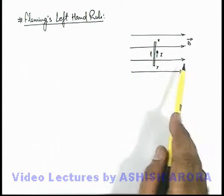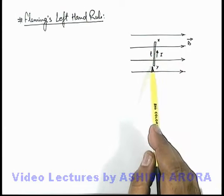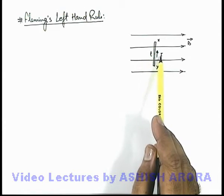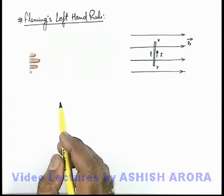a magnetic induction exists from left to right which is B vector, in which a wire XY is placed which is of length L and it carries a current I in upward direction. Now Fleming's left hand rule states